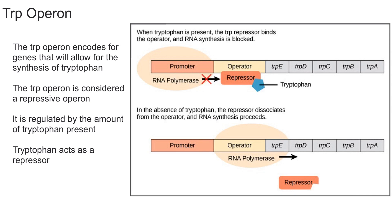The term aporepressor refers to a protein that has no DNA binding activity on its own and requires the presence of a co-repressor — in this case tryptophan — to turn transcription off. This repressor is technically considered an aporepressor, meaning it is unable to repress transcription on its own. Tryptophan acts as the co-repressor. This creates a negative feedback loop: as we keep transcribing these genes and making more tryptophan, eventually the tryptophan binds to the repressor to stop transcription.